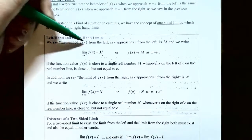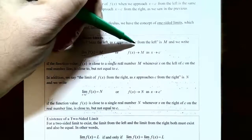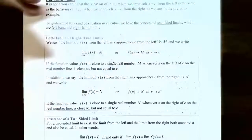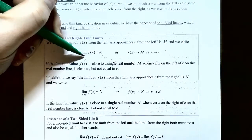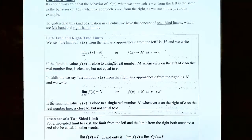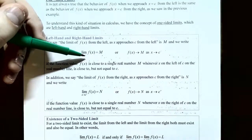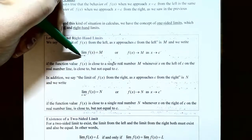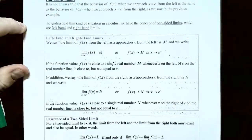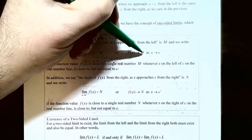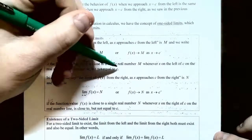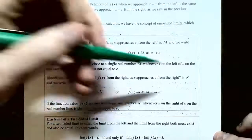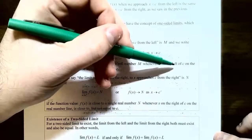The left-hand limit: the limit of f of x as x approaches c from the left side equals a number m. We write it as lim as x approaches c with a superscript minus sign — indicating you're approaching from the left side of c. If the y values are approaching m as x gets close to c from the left, then the limit equals m. In arrow notation: f(x) approaches m as x approaches c from the left, getting close to c but not equaling c.